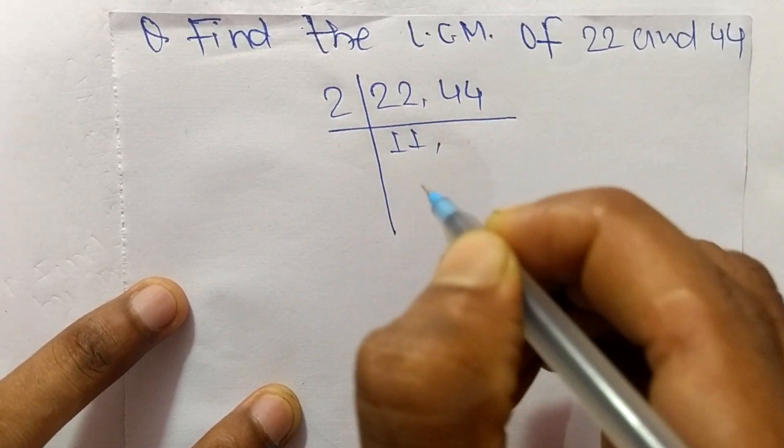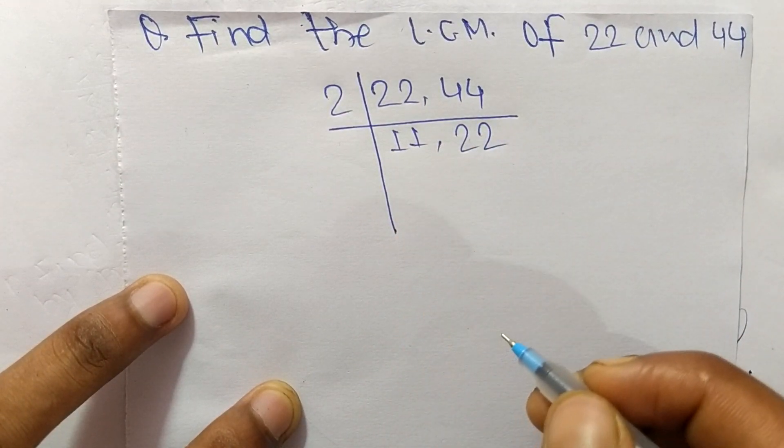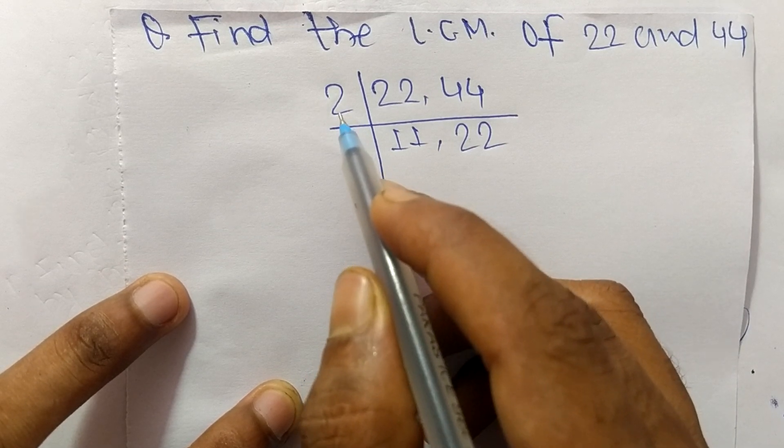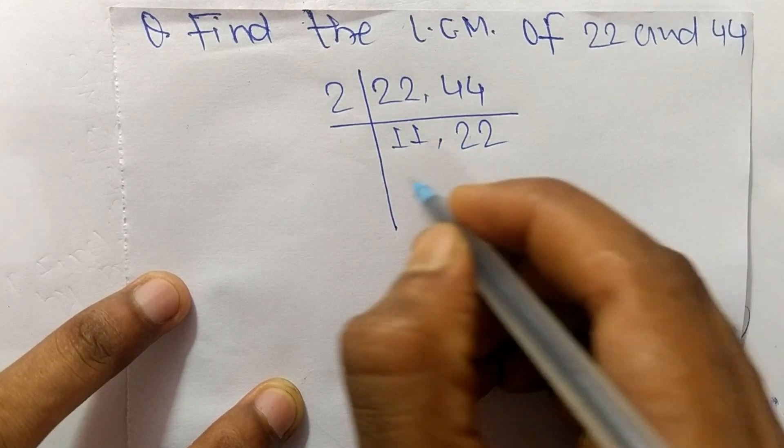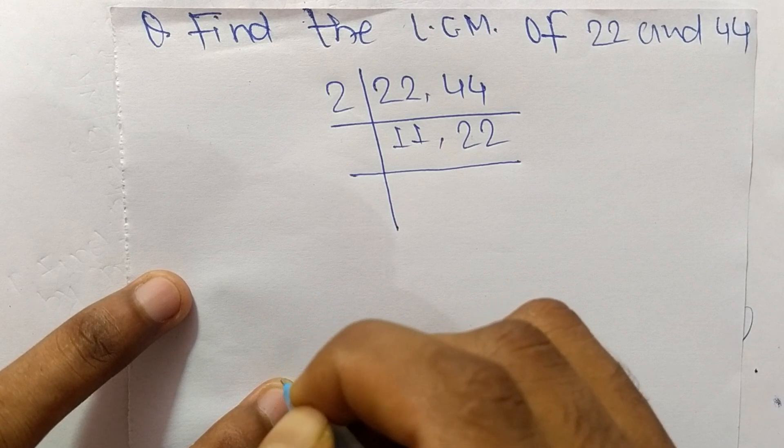2 times 11 equals 22 and 2 times 22 equals 44. Now when we take 2 again, 2 can exactly divide 22 but can't exactly divide 11. So we choose the number greater than 2 that can exactly divide 11 and 22. The number is 11.